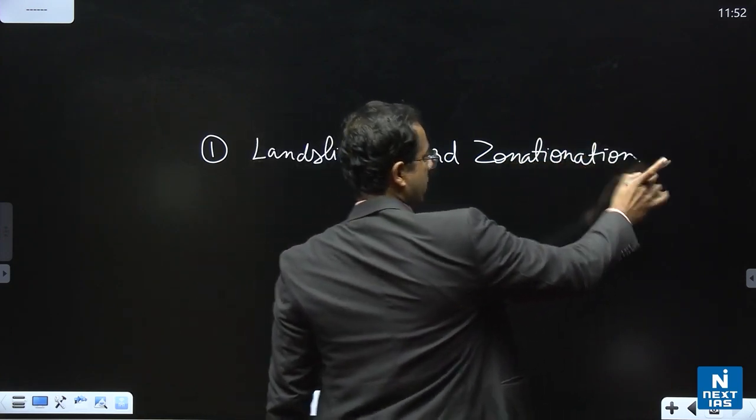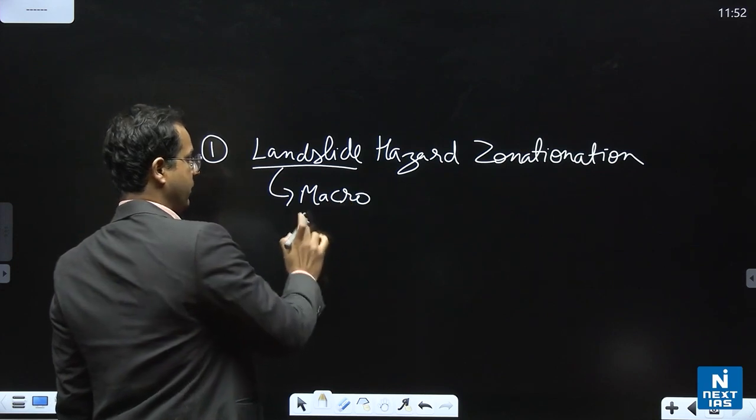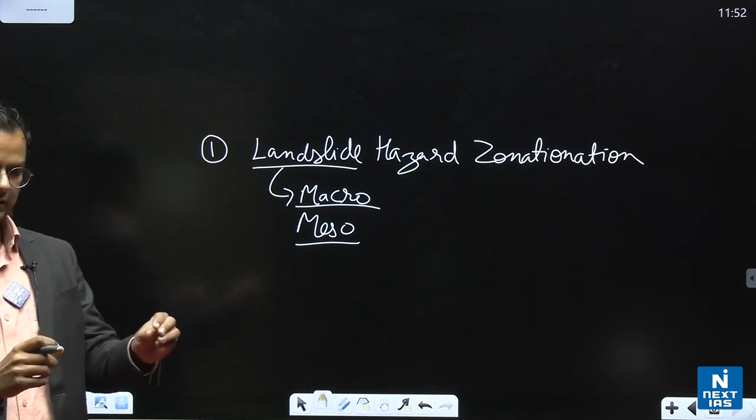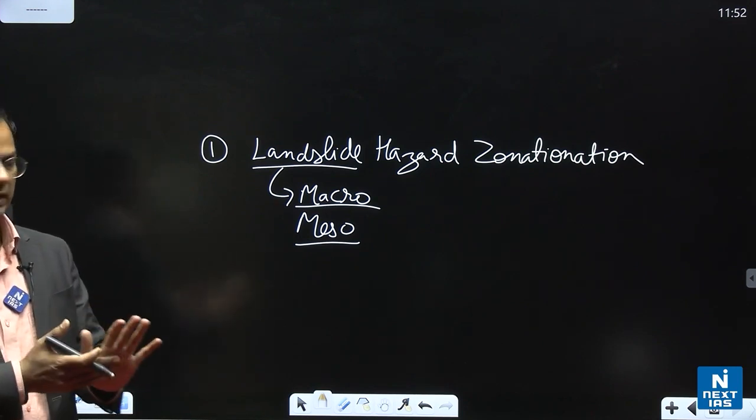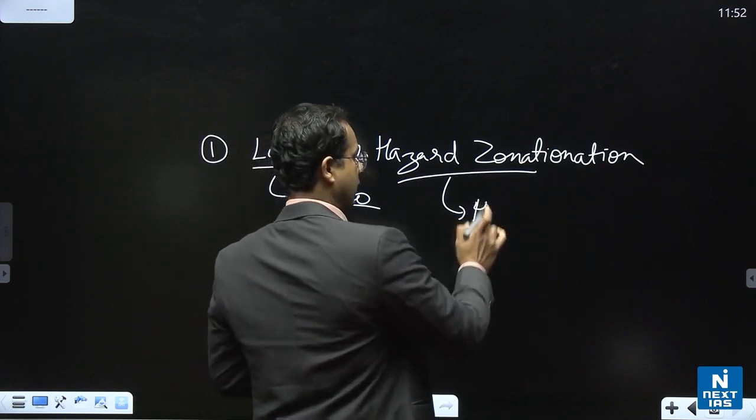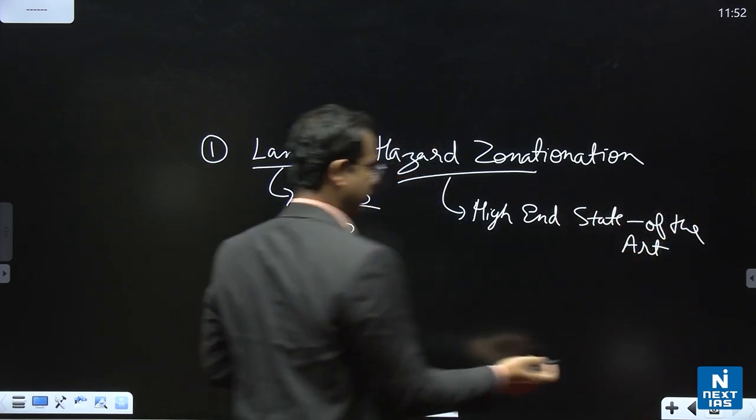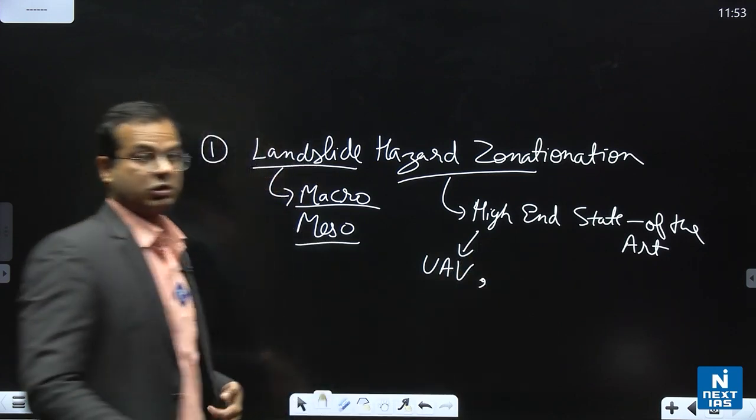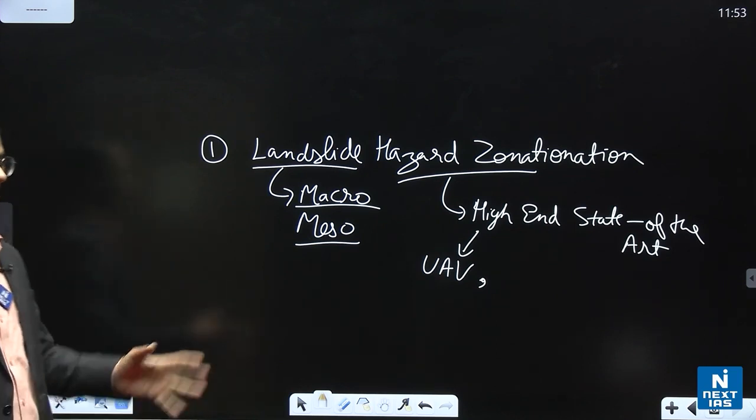That is basically mapping of the landslide areas in India, and the mapping has to be done at the macro level and the meso level. Macro level means at the level of the individual cities and individual areas, individual places - which place is more vulnerable to landslide. For doing this mapping work, we have to use high-end state-of-the-art technology. For example, what we can use - we can use UAV, we can use high-resolution earth observation data, we can use high-resolution lasers to map the ground at the accurate level. So all these things we can do for mapping.